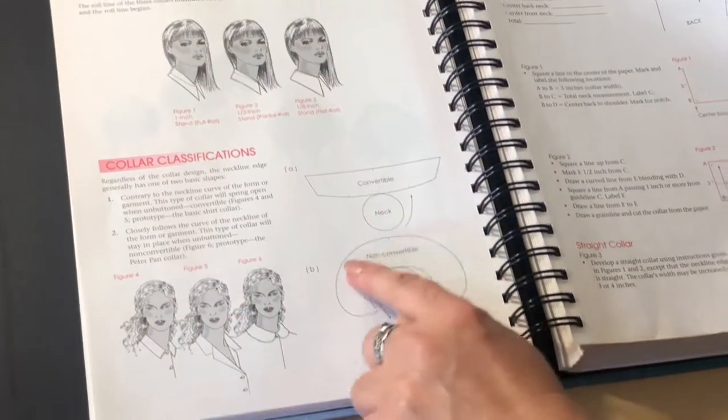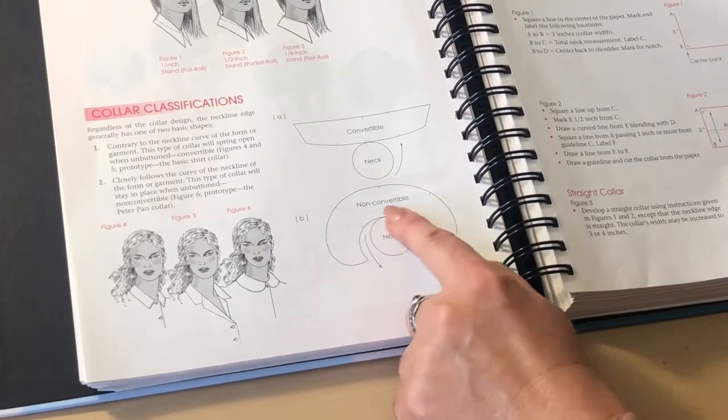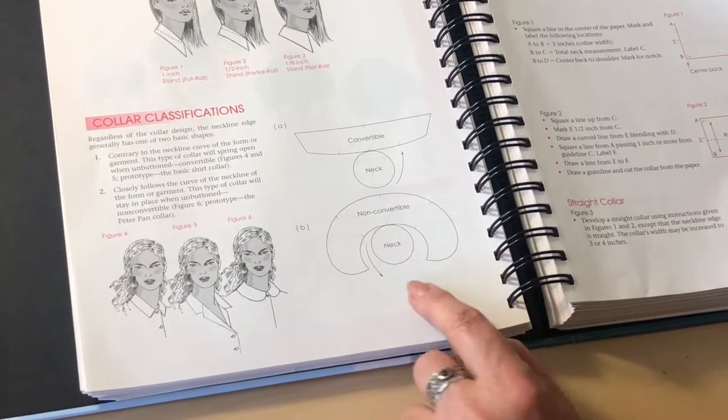Meanwhile, some other collars, like a Peter Pan collar, is a non-convertible because the cut, the structure, is circled like the neckline.